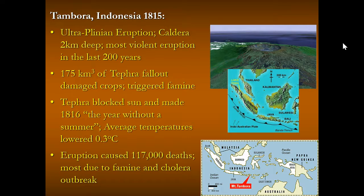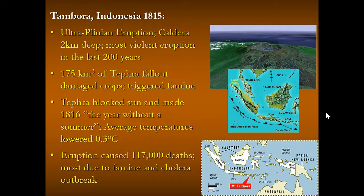Mount Tambora in Indonesia, when it erupted in 1815, was the most violent eruption in the last 200 years. The tephra fallout damaged crops, blocked out sunlight, and left nothing to eat. People began dying from famine, then a cholera outbreak killed even more. In all, almost 120,000 people were killed or died because of this — most deaths occurring long-term from tephra effects. In fact, 1816 was called 'the year without a summer' because of the globally cooler temperatures caused by this eruption.